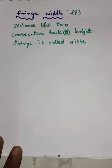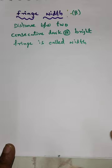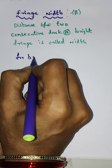Hello everyone. Fringe width - here it is fringe width we can observe in interference pattern. So what is meant by fringe width? Fringe width is the distance between two consecutive dark or bright fringes.